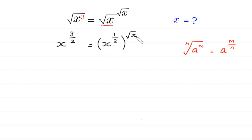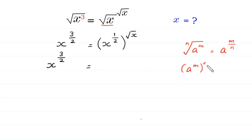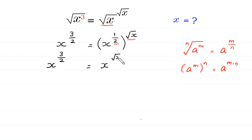So x to the power 3 over 2 is equal to x to the power 1 over 2 whole to the power square root of x. According to the property a to the power m, whole to the power n, equals a to the power m times n, we multiply 1 over 2 by square root of x, giving x to the power square root of x over 2.